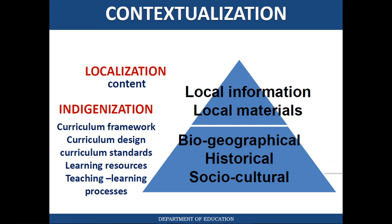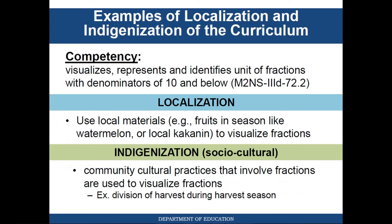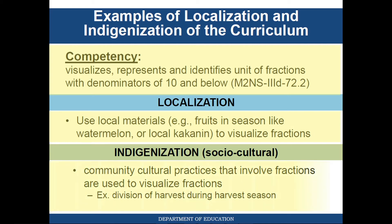Here are some examples provided by the Department of Education. For the competency 'visualizes, represents, and identifies unit of fractions with denominators of 10 and below,' localization can be done by using local materials to visualize fractions. These local materials may be fruits in season, such as watermelon or local varieties. For indigenization, sociocultural context may be used — specifically, community cultural practices that involve fractions are used to visualize fractions.